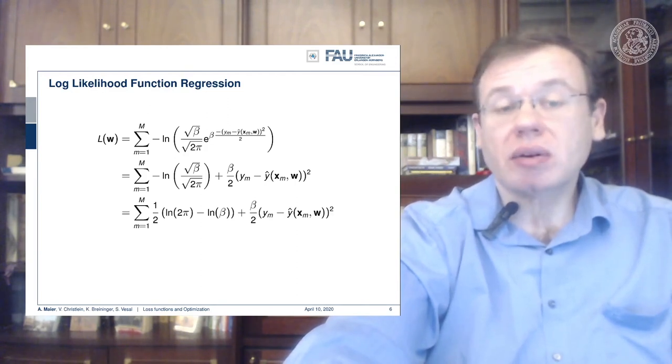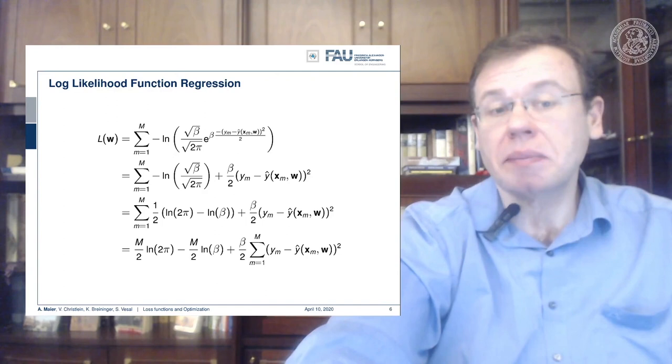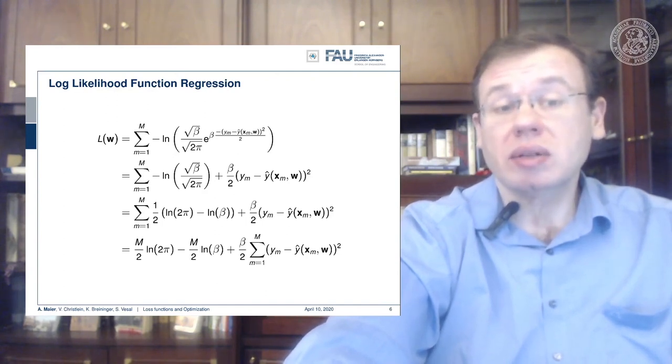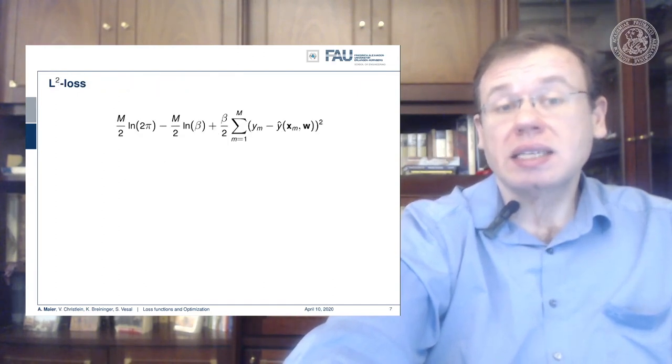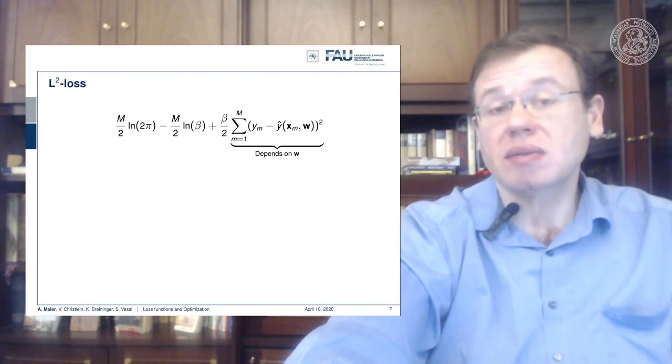By applying the logarithm again and pulling out the square root, we see that the sum over the first two terms is not depending on m. So we can simply multiply by m in order to get rid of the sum and pull the sum to the last term. Now you can see that only the last part here actually depends on w. Everything else doesn't even contain w, so if we seek to optimize towards w...